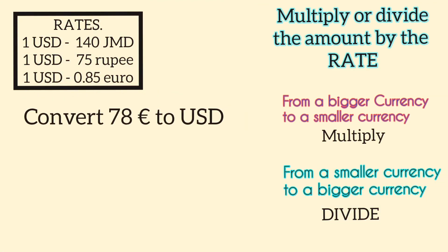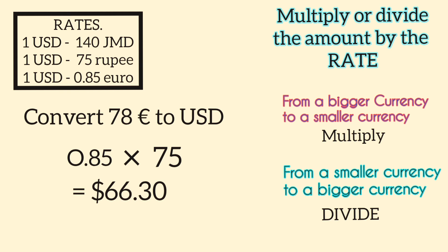Alright, so let's look at another example. Convert 78 euros to US dollars. So in this case, we are converting from a bigger unit to a smaller unit, which means we need to multiply. Multiply the rate by the amount. And this is equal to 66 dollars and 30 cents.